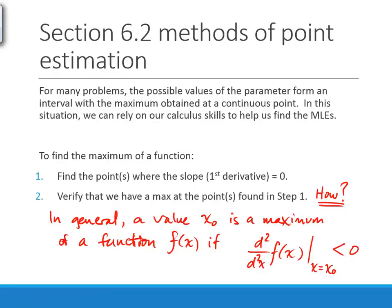Just remember some calculus: to find the maximum of a function, take its derivative and set it equal to zero. That only gives a critical value, so to confirm it's a maximum, take the second derivative. If the second derivative evaluated at that critical point is less than zero, you have a maximum; greater than zero means a minimum; equal to zero means a saddle point.